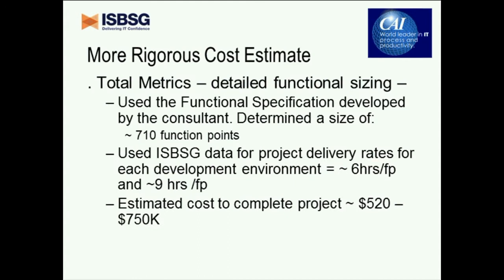A more rigorous cost estimate was done by a company here in Australia called Total Metrics. They did the detailed functional sizing, using the functional spec developed by the consultant with the use cases, and determined it was about 710 function points — a chunk bigger than our rough estimate, but there had been some changes in the spec. They then used the ISBSG data delivery rates more accurately, knowing more about the likely development environment. Two rates were relevant: six hours per function point and nine hours per function point. The estimated cost came out between $520,000 and $750,000 — our original rough estimate had been pretty close to the middle of that range.